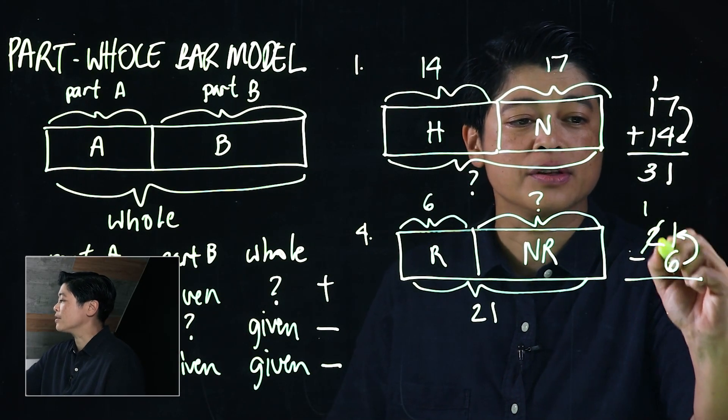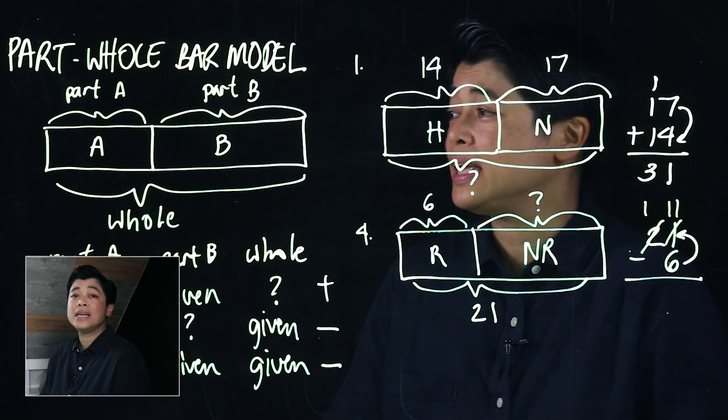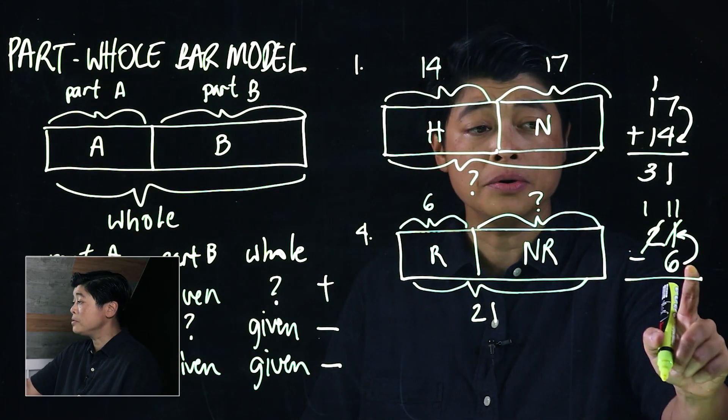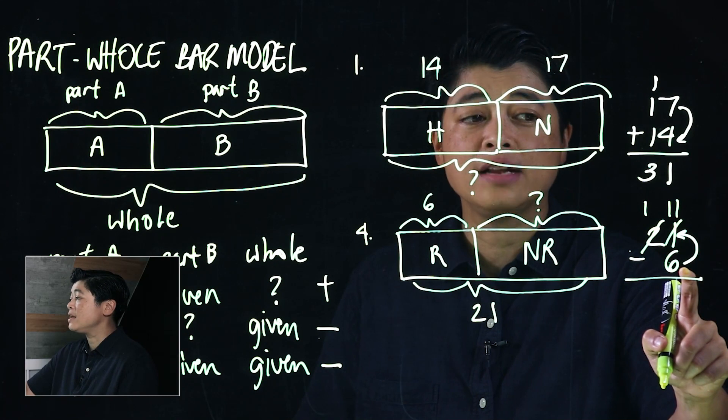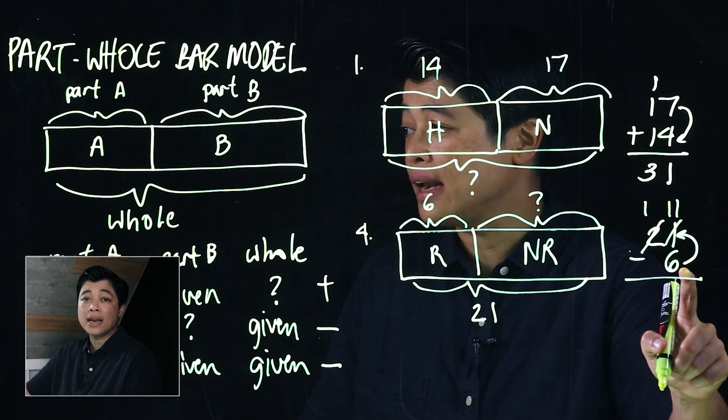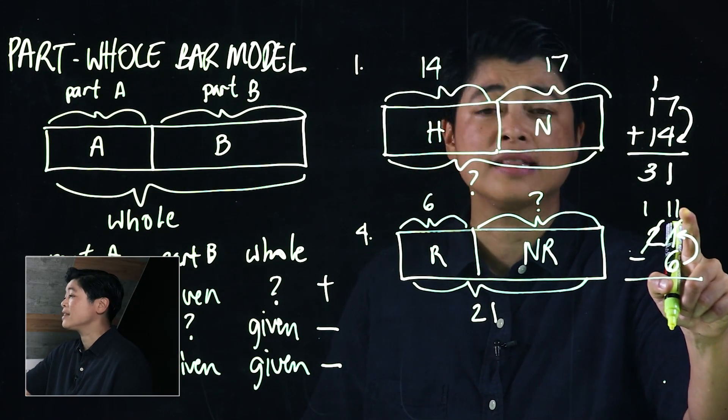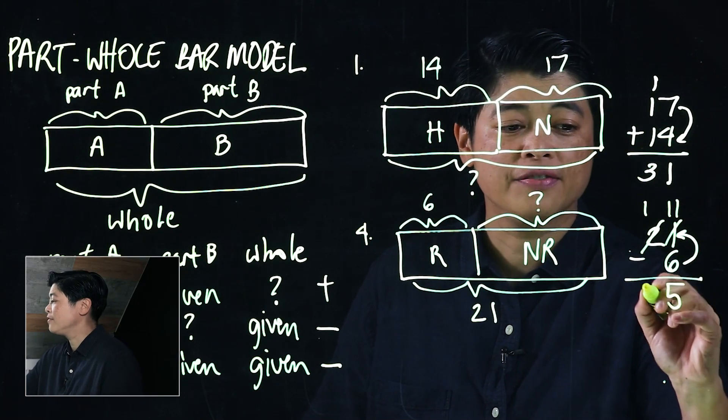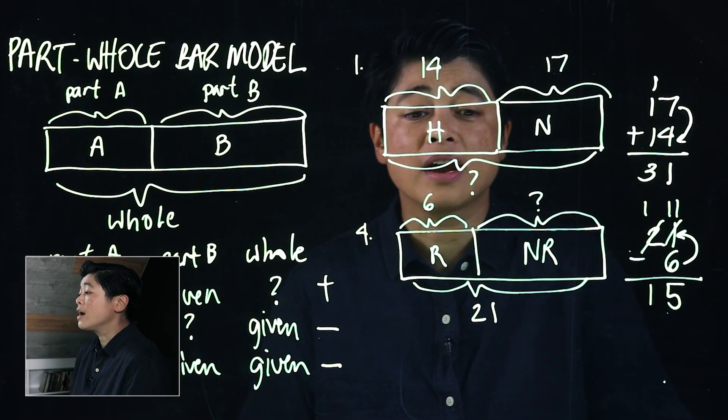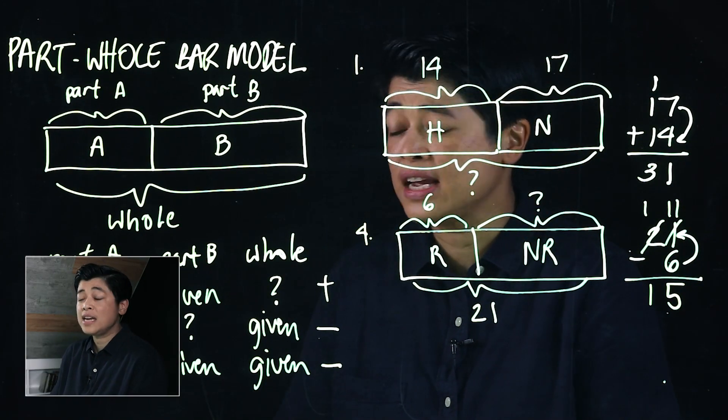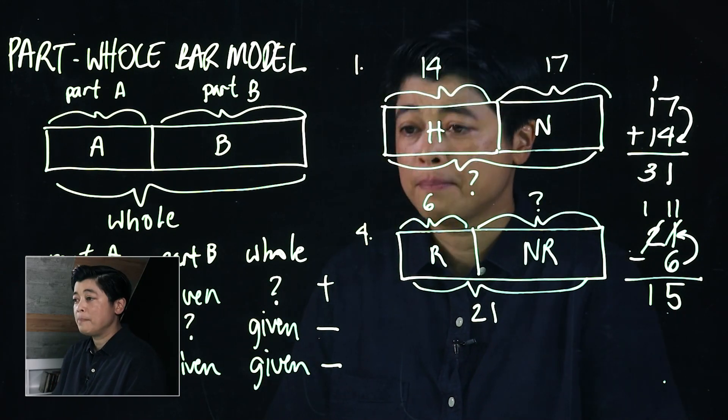What we do is count to 11. We're going to borrow and regroup. This will now be 11, so we borrow and regroup. From 6 we need 4 more to get to 10, and an additional 1 makes it 5. Therefore there are 15 not rotten mangoes.